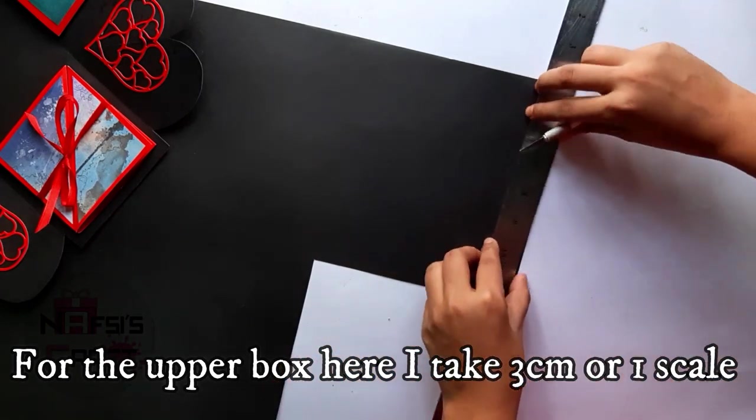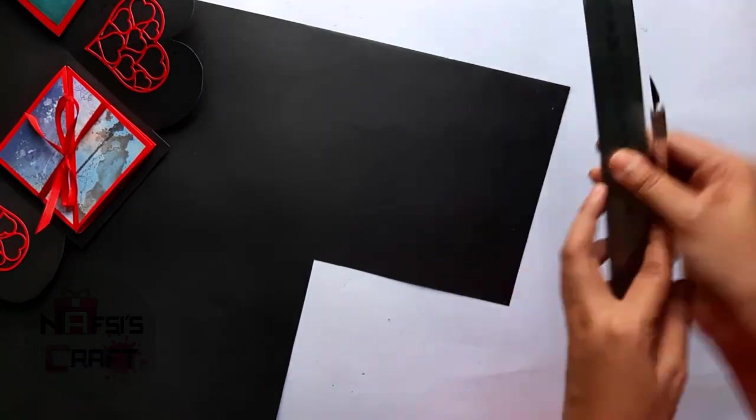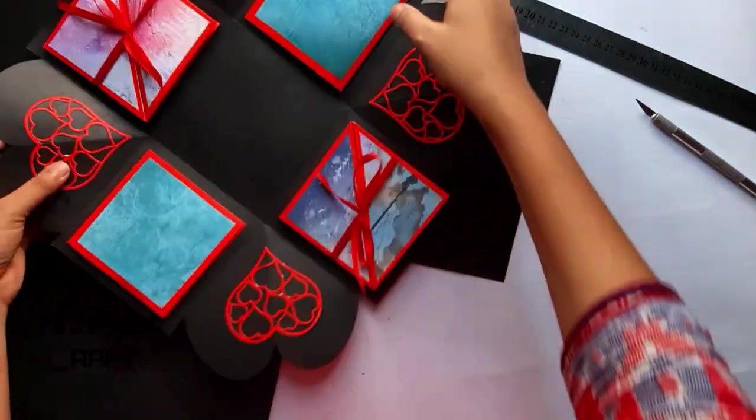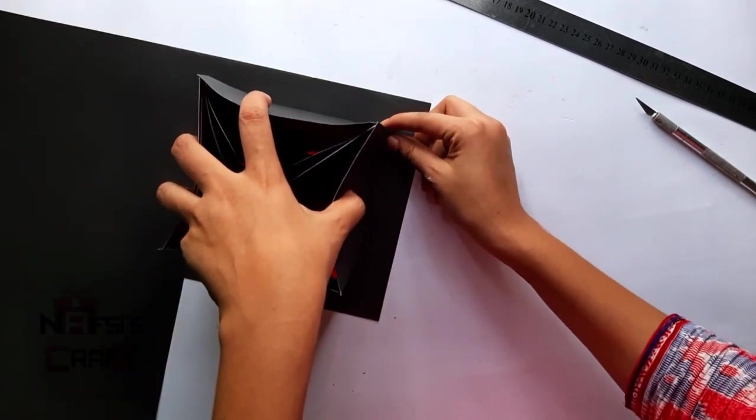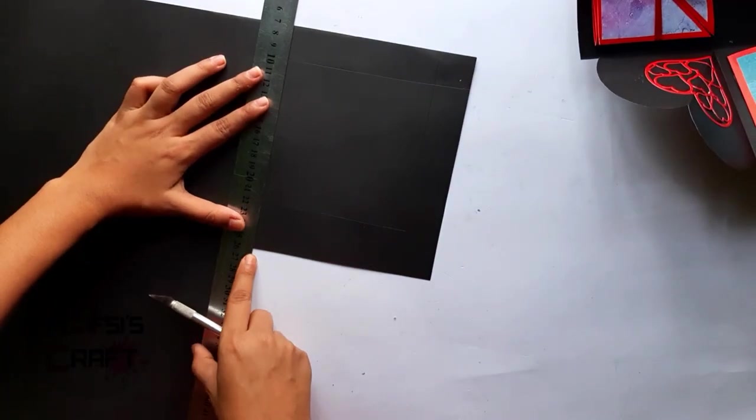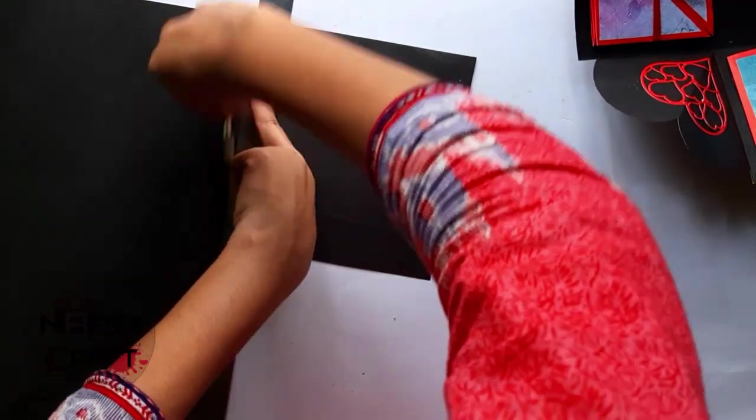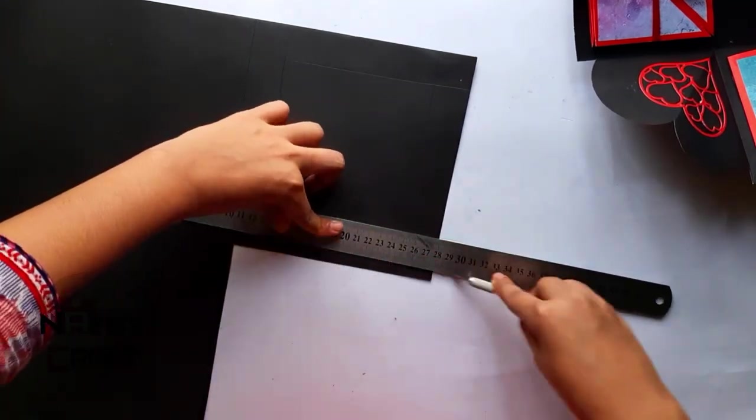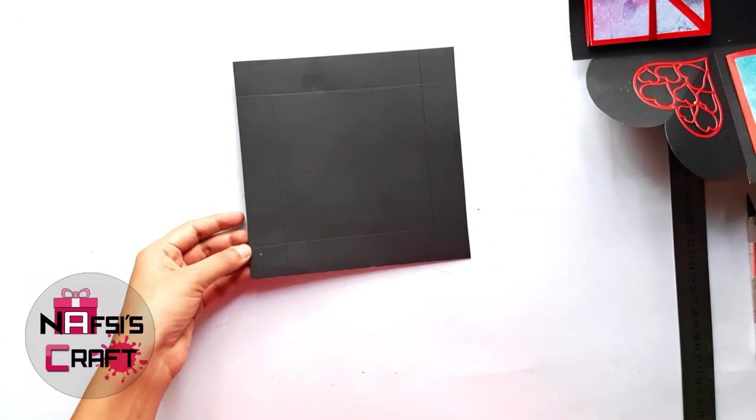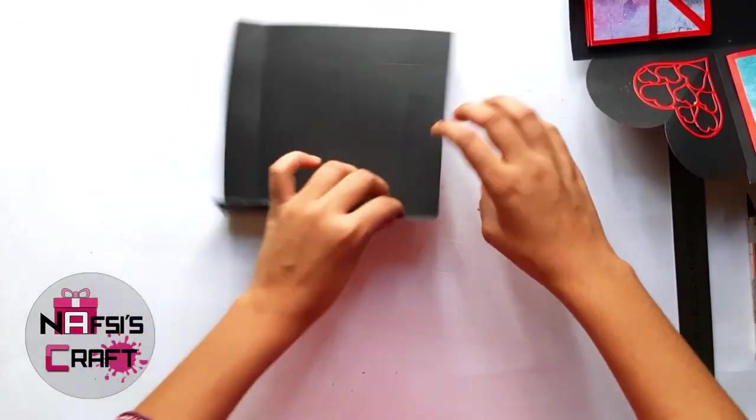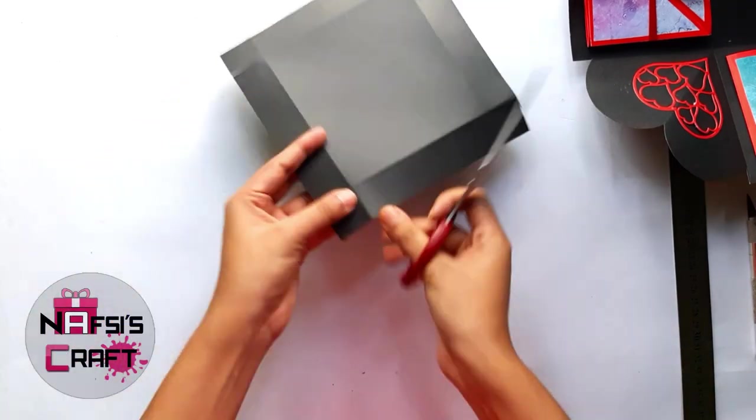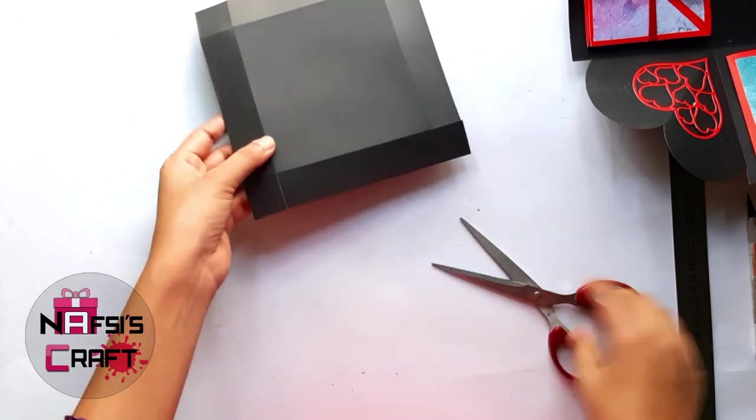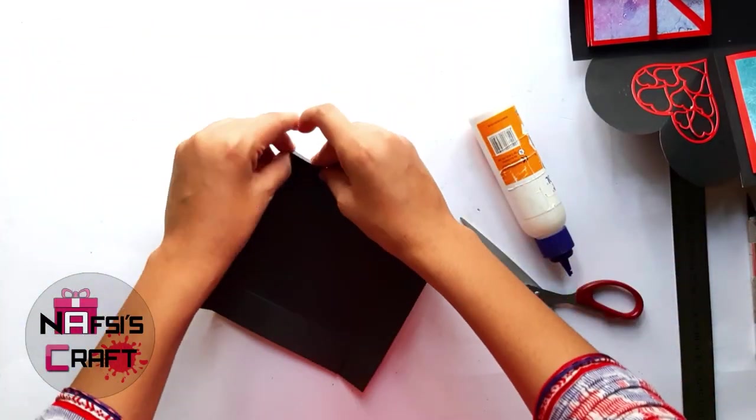Now it's time to make the upper box. For this you will have to mark it 3cm on a scale. Here I take one scale. After this put the box in the middle. Then I'll also take one scale from the both side. Now fold it and cut the corners. After this apply some glue and attach them.